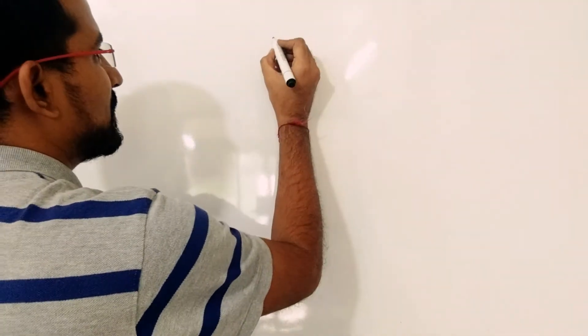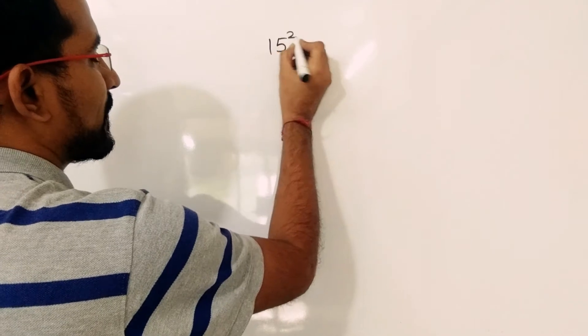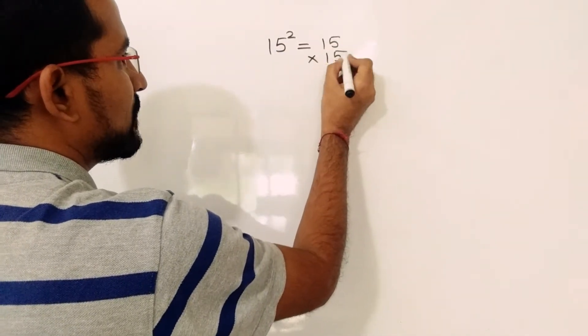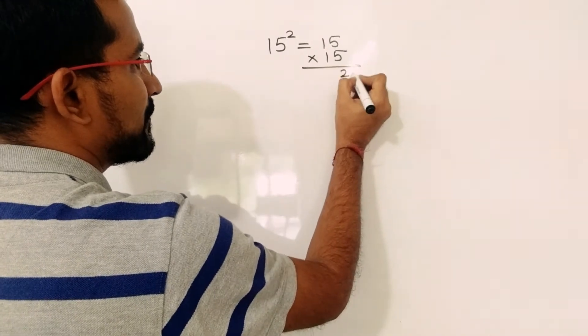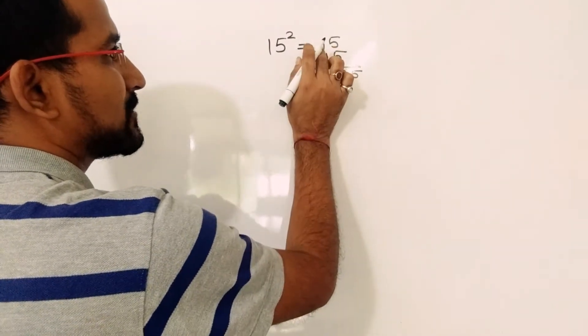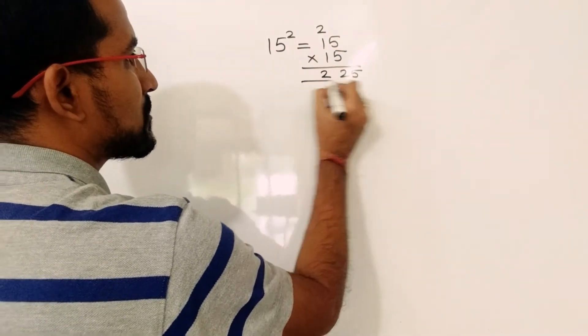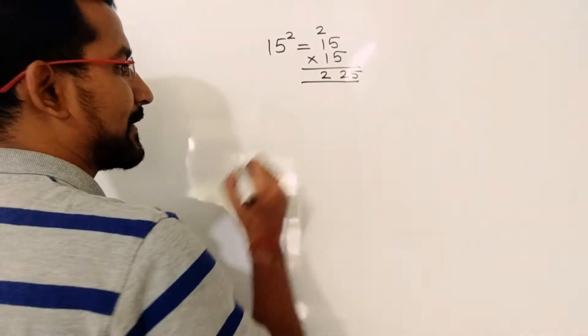We will take the example 15 square. So 15 squared is 15 into 15. 5 into 5, we will write 25. Increase 1 by 1, so it will become 2. 2 into 1, that is 2. So 225 is the square of 15.